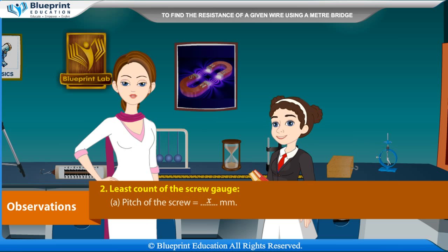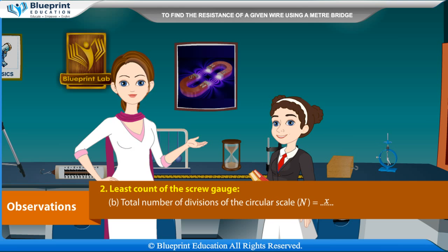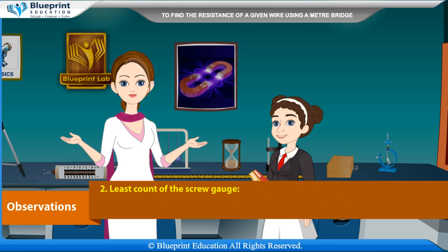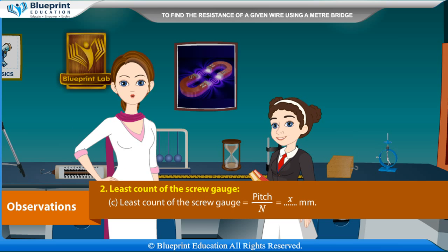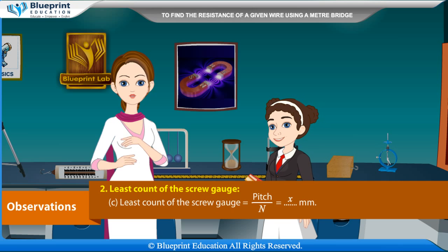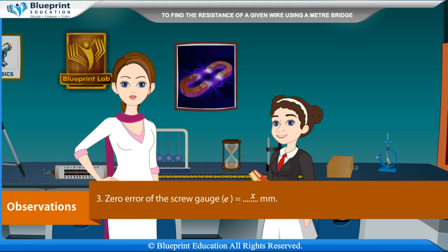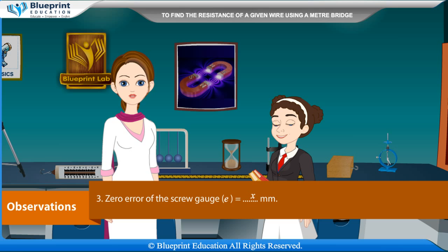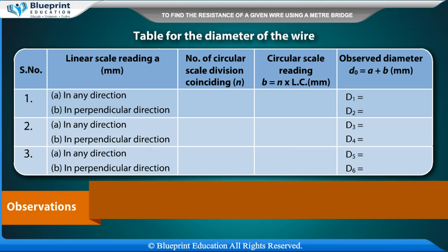Least count of the screw gauge: pitch of the screw = X mm; total number of divisions of the circular scale N = X; least count = Pitch/N = X mm. Zero error E = X mm; zero correction = −E = X mm.